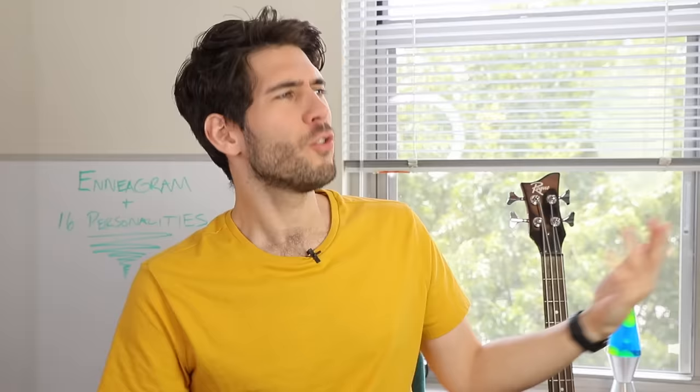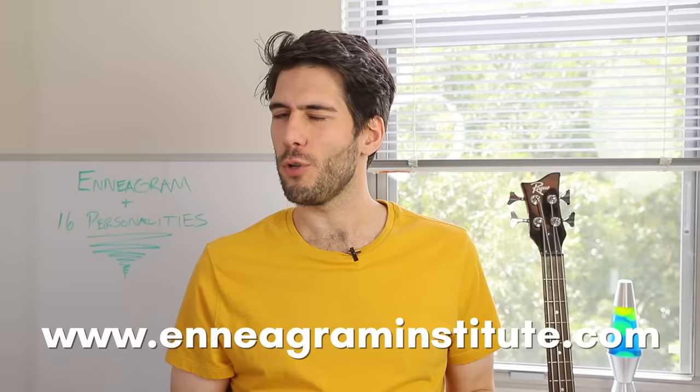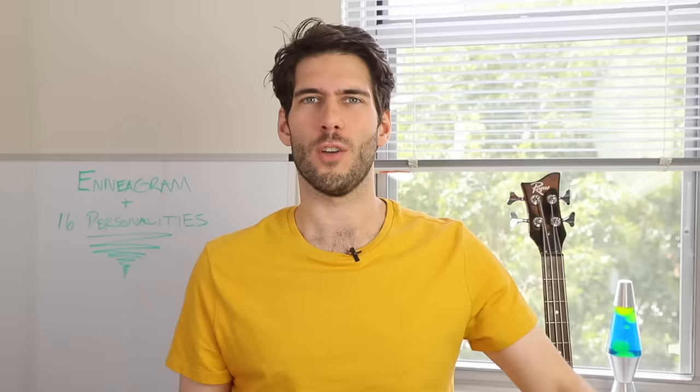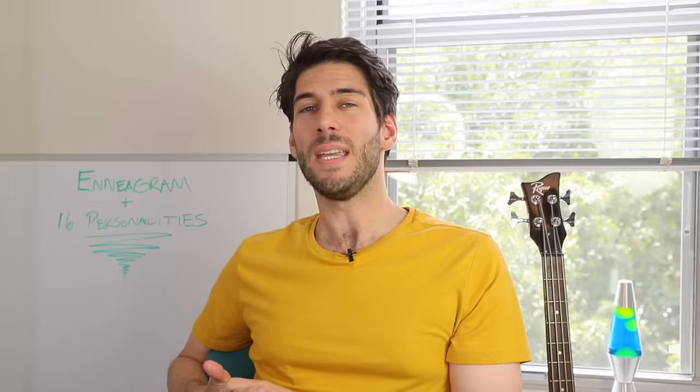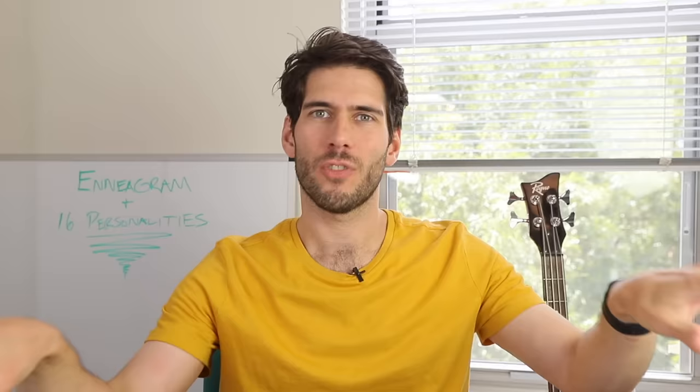Let's start off with type one on the Enneagram, which is called the reformer. I've got a lot of my descriptions here from the Enneagram Institute website, which is a great resource for learning about the Enneagram. The Enneagram type ones are all about the rules and being right, doing the right thing. They really hate being criticized, which can lead them to being perfectionistic. Which of the 16 personalities are most likely to be ones? I would say generally it's the J types, especially the TJ types, because the Js are more likely to be focused outward and trying to get things done in the outside world and being concerned with what other people think is right and wrong and the criticism that can be directed at them.